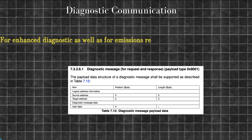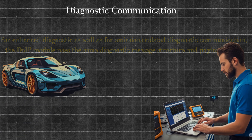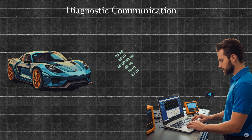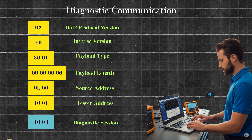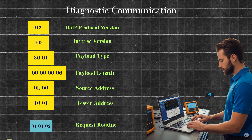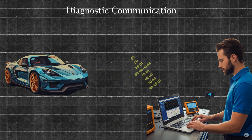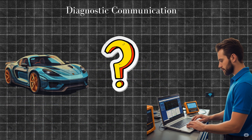Now comes the real meat: the diagnostic session. Here, the tester sends UDS commands over TCP/IP. Think of them as predefined hex phrases — like 1003, which means 'start extended diagnostic session,' or 22F190 to request the VIN number, or 3101 which is used to start a routine like clearing DTCs, or communication control, which is service 28. The ECU responds — sometimes with data, sometimes with silence, which usually means you messed up the message.